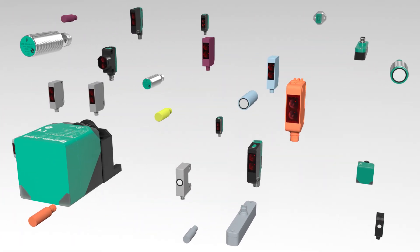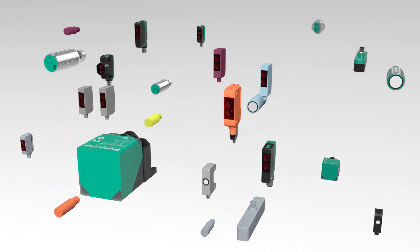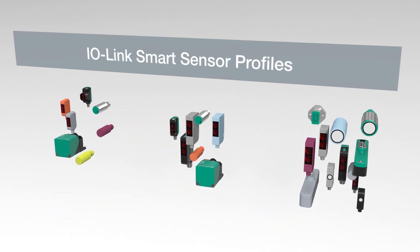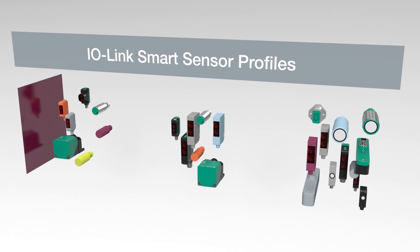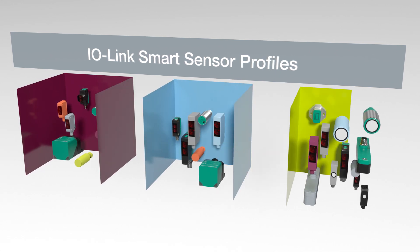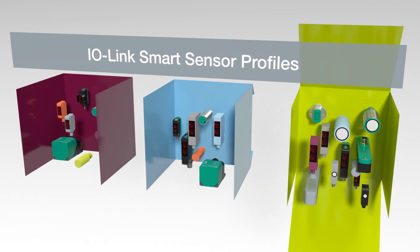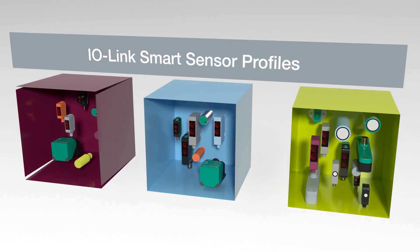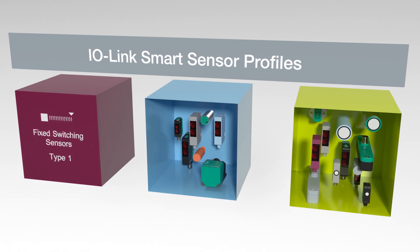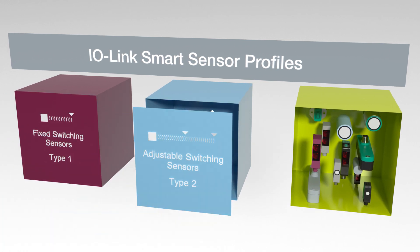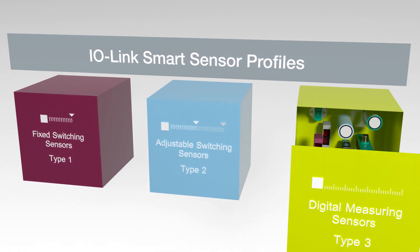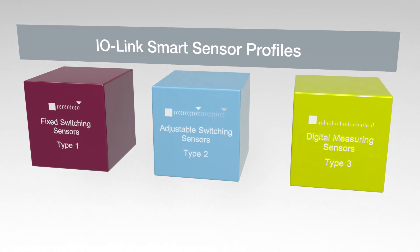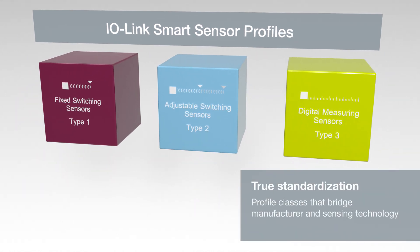All sensors are divided into several classes. Classes do not depend on the manufacturer or sensing technology, but on whether a sensor delivers a switching or measurement value. Three classes are currently defined: Type 1, fixed switching sensors; Type 2, adjustable switching sensors; Type 3, digital measuring sensors.